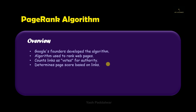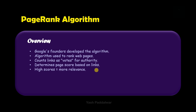Based on the links between these nodes, the algorithm determines the page score, which is nothing but the rank of every single web page. If a particular page has a higher page score, it means that page is of more relevance to the query fired by the user. Out of all the page score values, whichever is the maximum will be called the most relevant page.